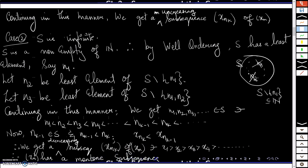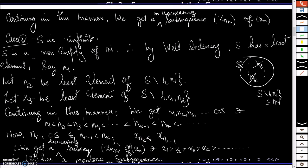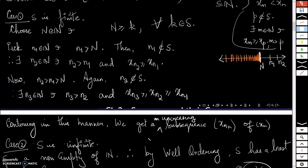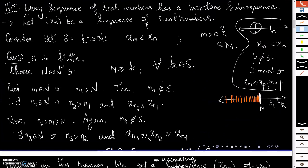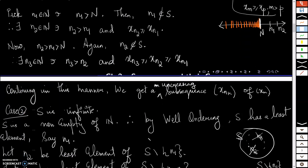In both cases we have obtained a monotone subsequence — increasing in Case 1 and decreasing in Case 2. Therefore xn always has a monotone subsequence, and that is the conclusion of this theorem. Whenever I take any sequence of real numbers, it will always have a monotone subsequence.